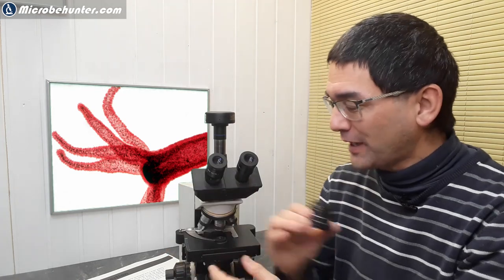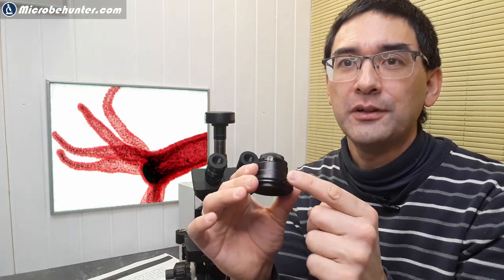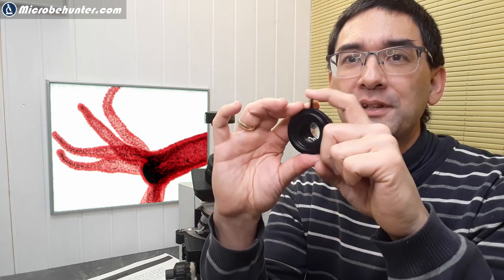Hi, Microbe Hunter here. This here is a condenser of a microscope. The condenser can be found beneath the stage, and there is a small lever here which opens and closes the condenser aperture diaphragm.